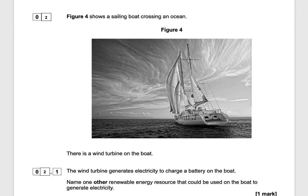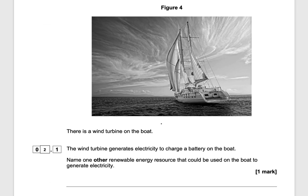Figure 4 shows a sailing boat crossing an ocean. There is a wind turbine on the boat which generates electricity to charge a battery. Name one other renewable energy resource that could be used on the boat to generate electricity. The answer is solar energy, worth one mark.